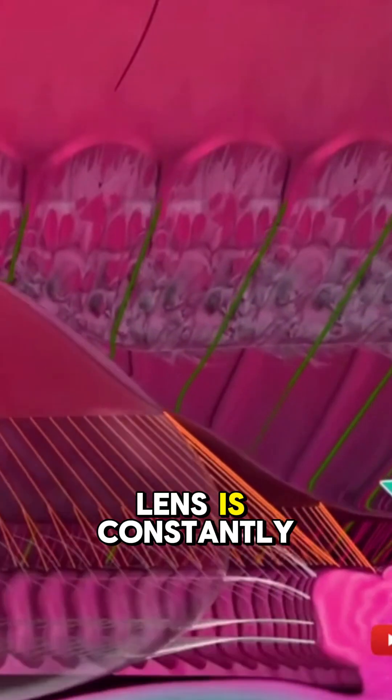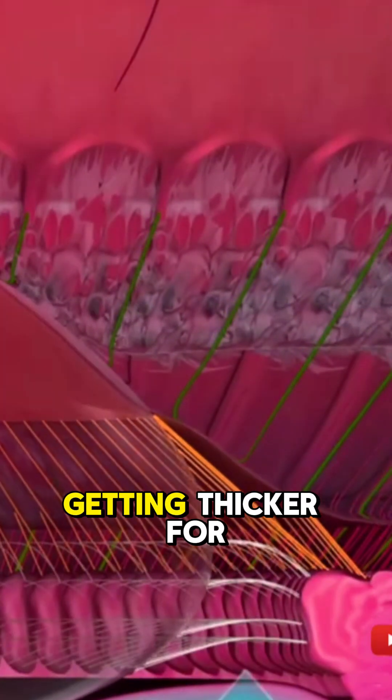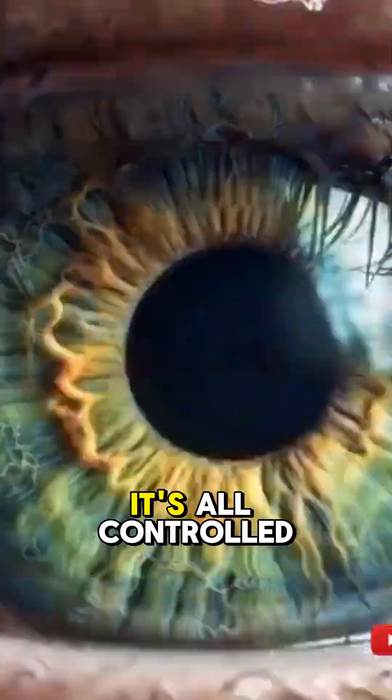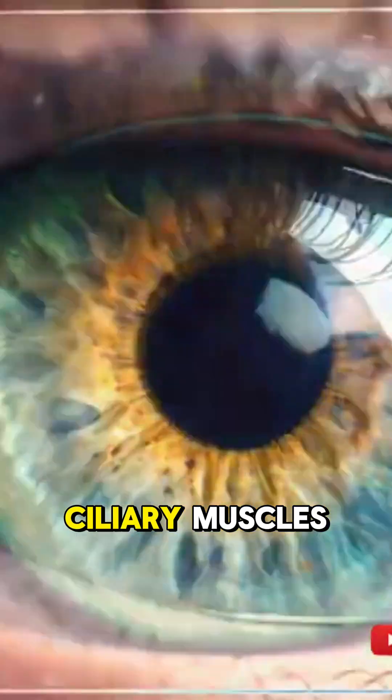Behind that, the lens is constantly changing shape, getting thicker for things up close and thinner for things far away. It's all controlled by these tiny ciliary muscles.